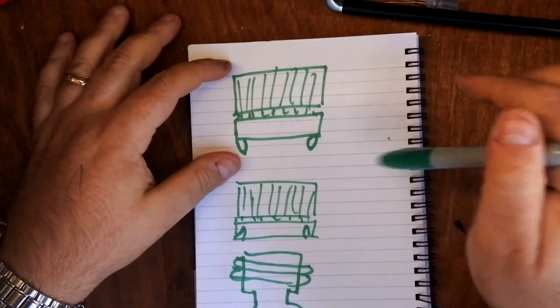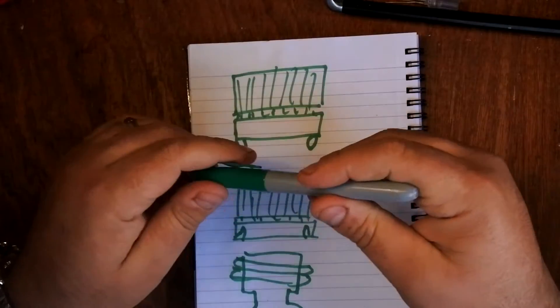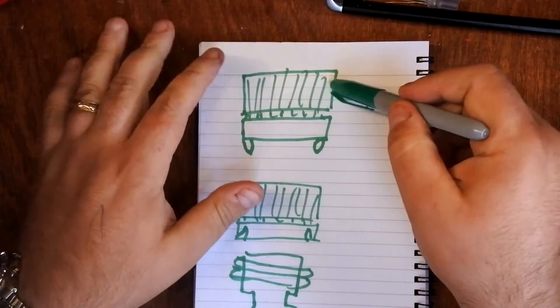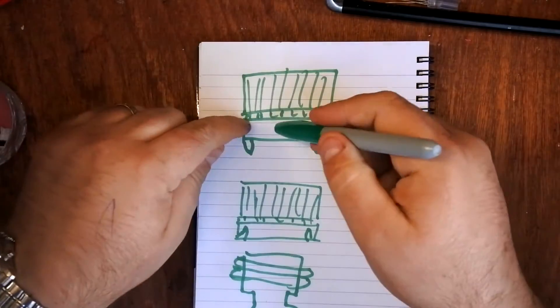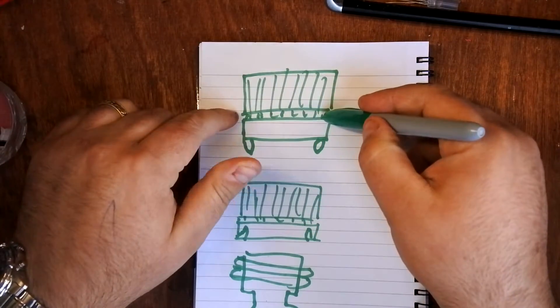So here we have a bottle top as it would arrive in the factory. You have here the top, the bit that you grasp onto to unscrew it. And there's a little perforation here, that's the seal.